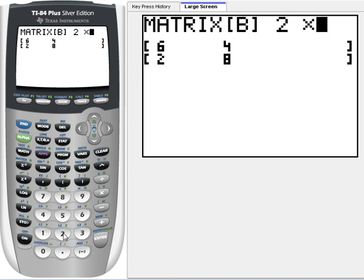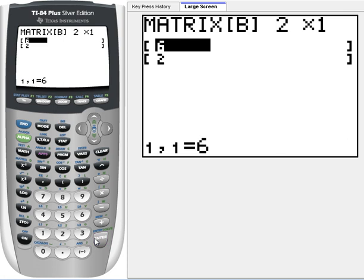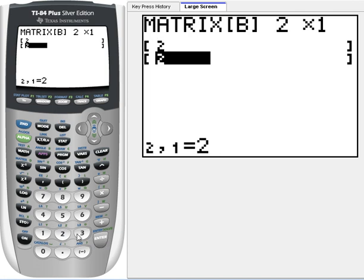Matrix B is going to be a 2x1 matrix, so we type in 2, enter, 1, enter. You can see it changes the dimensions, so now we have two rows and one column. Then we just type in our numbers, 2 and 2. There's our matrix B.